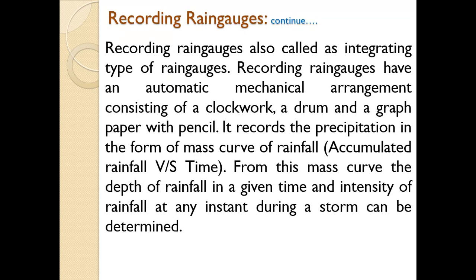Recording rain gauges automatically record precipitation with the help of a mechanical arrangement. They consist of a clockwork, a drum, and a graph paper with a pen, recording precipitation in the form of a mass curve of rainfall. The mass curve of rainfall is a plot of accumulated rainfall versus time. From this mass curve one can get the total depth of precipitation for a certain period, the total duration of precipitation, and the intensity of rainfall.